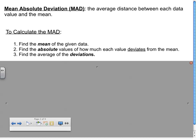To calculate the mean absolute deviation, what we first do is we find the mean of the data given, then we find the absolute values of how much each value deviates from the mean. Basically all you're doing is finding the distance that each value is from the mean. And then you find the average of those deviations.